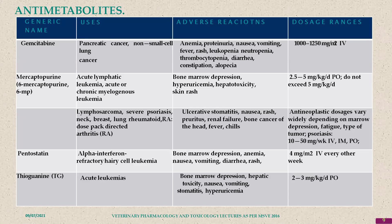Another antimetabolite is gemcitabine, used in pancreatic cancer and non-small cell lung cancer. Mercaptopurine, also known as 6-MP, is used in acute lymphatic leukemia and chronic myelogenous leukemia. The side effects are always bone marrow depression and hepatotoxicity.